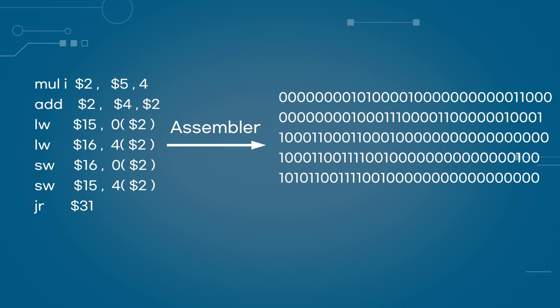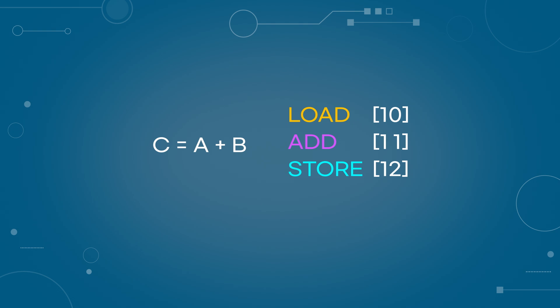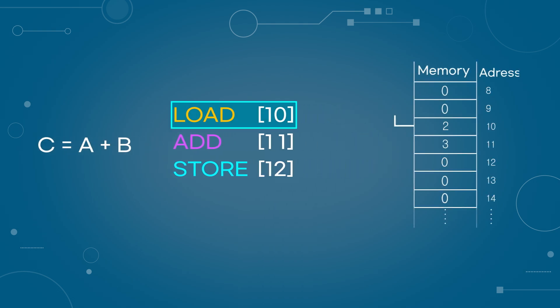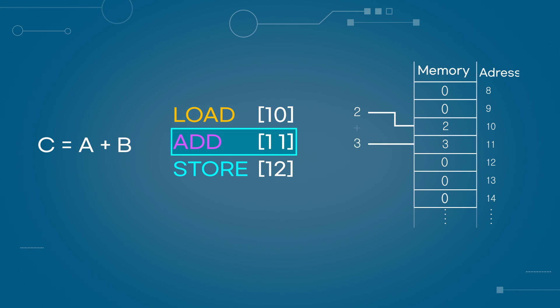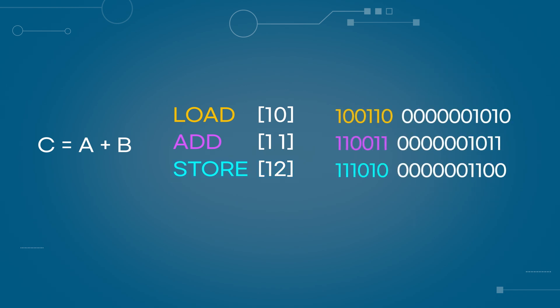Let's simplify this process. Here is an example of code written in a high-level programming language. It adds the values of A and B, and stores the result in C. After the compilation process, this is translated into assembly language. For example, this can be interpreted as: read the data at memory address 10, add it to the value at memory address 11, and store the result in memory address 12. The translated assembly language is then converted into machine code based on predefined rules.